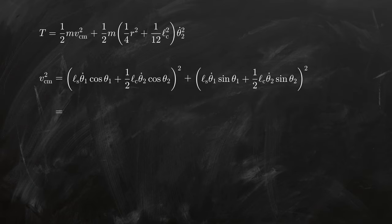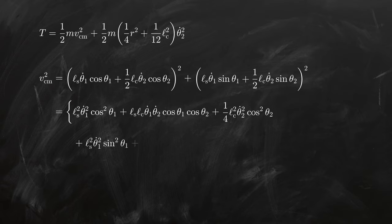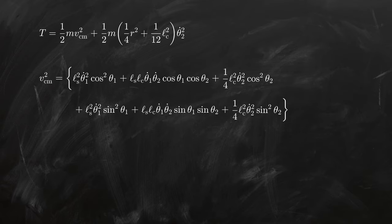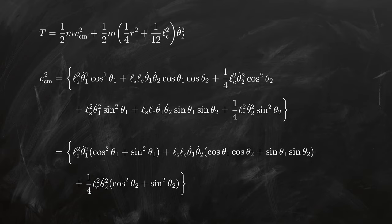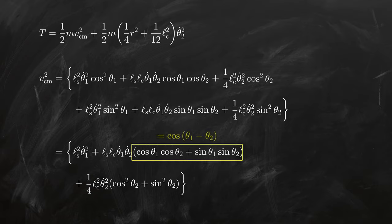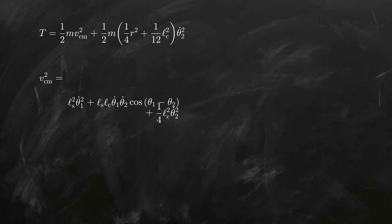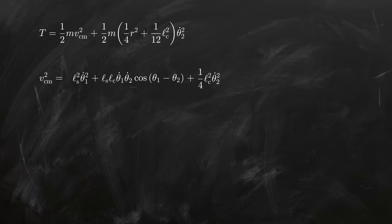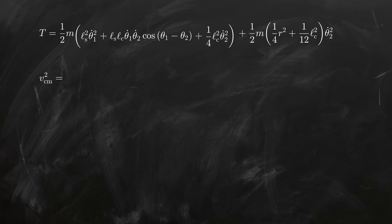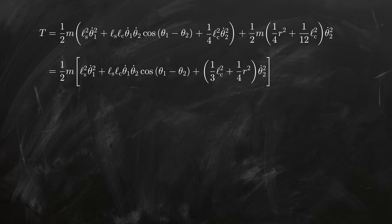If we proceed to expand these squares, we end up with this complicated thing. But if we factor some of the terms, we can use a bit of trigonometry to simplify things considerably. This gives us a much nicer expression, which allows us to complete our formula for the kinetic energy. And we can clean it up a bit further by factoring out one half times the mass and combining a couple of terms.